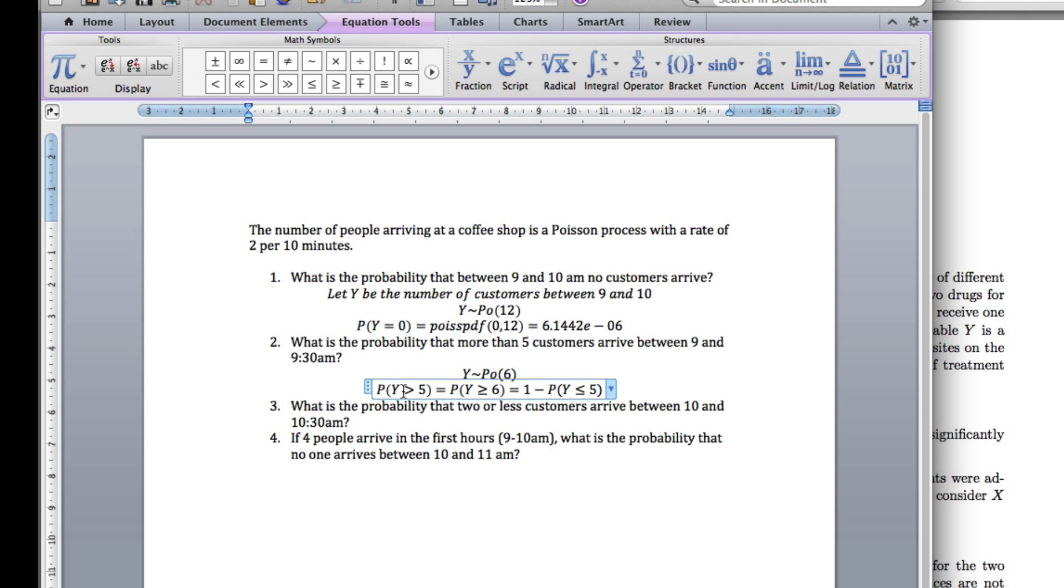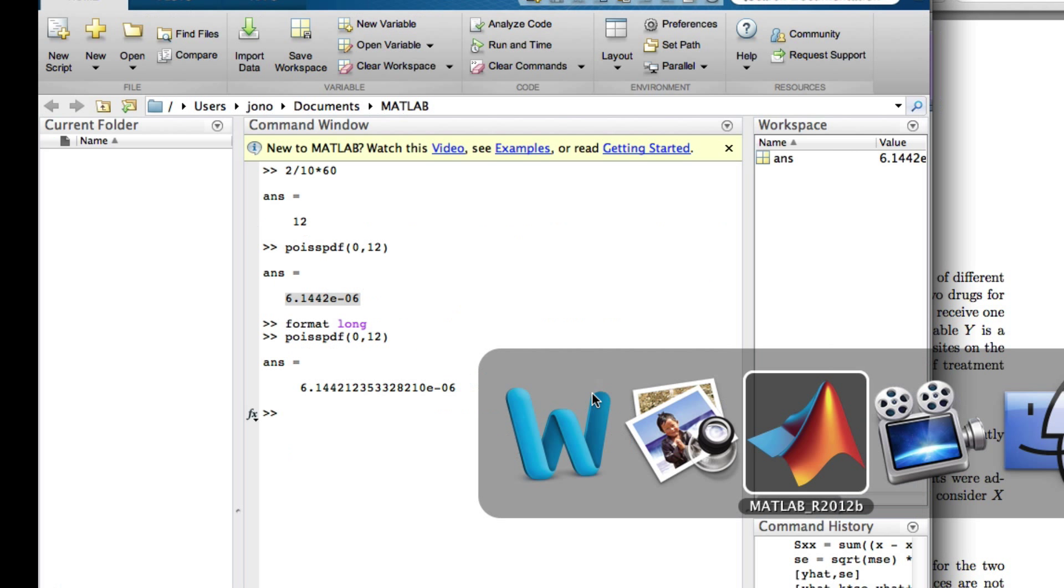I changed, first of all, my greater than to greater than or equal, then I converted that into the CDF, the 1 minus. Being very careful, because again, the Poisson is a discrete random variable. Greater than and greater than or equal are not the same thing, so we have to take that into account. Now I've got that, I can actually enter that into MATLAB.